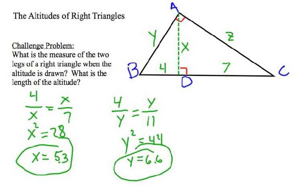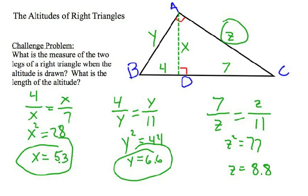Alright, let's solve for Z. Well, Z is the other leg of the triangle. And so, we're going to be putting that in the geometric mean position in our proportion, because that leg of the triangle, Z, is the geometric mean between the near part, which is 7, and the entire hypotenuse, 11. So, Z squared equals 77. And Z is going to equal 8.77, which is 8.8.